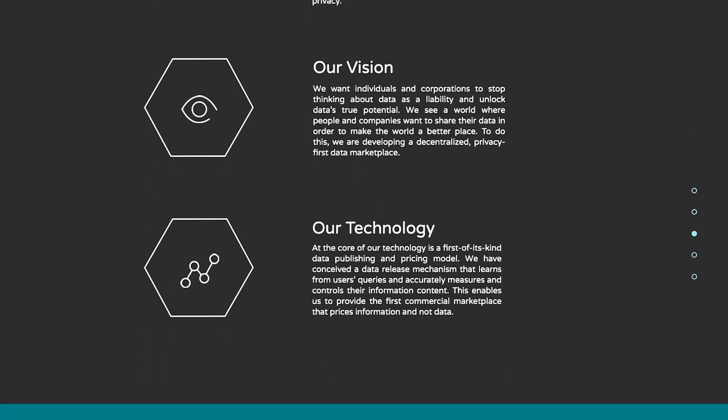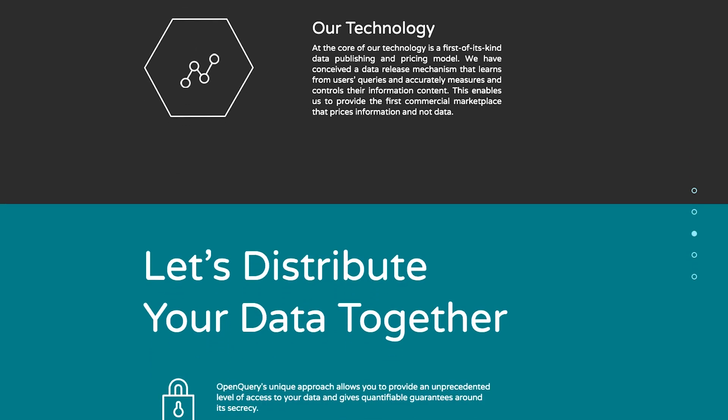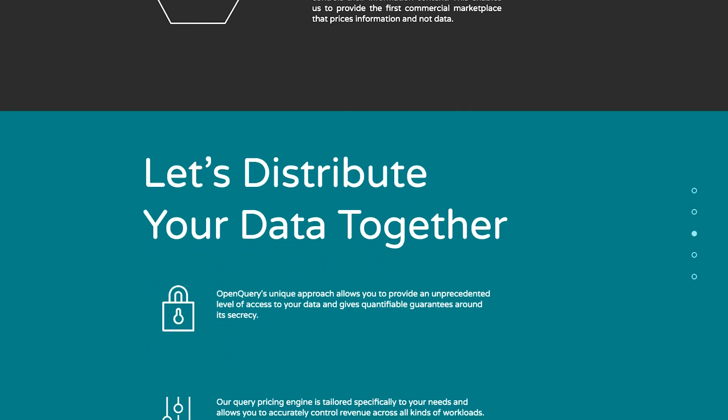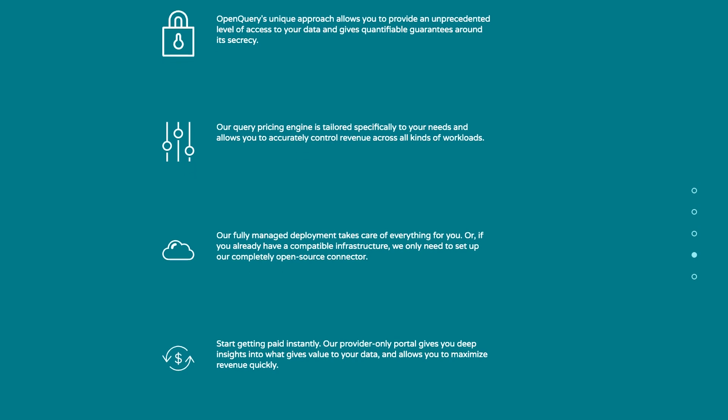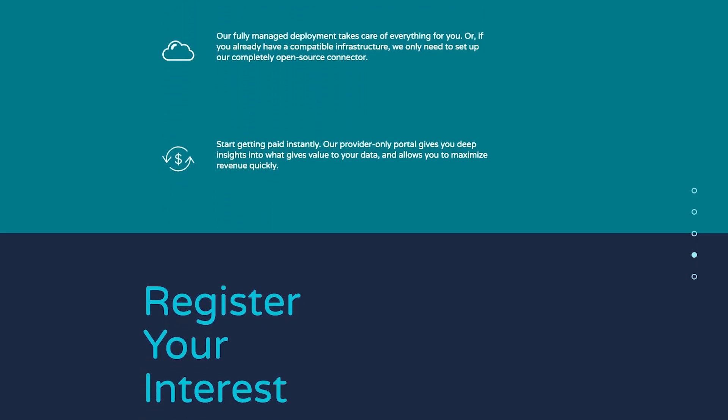The second problem is privacy and, more generally, conflicts of interest and sensitive information in that data. The third but also very important issue is the economic property of data. Data as an economic good is non-excludable — if you share it with someone, you can't really ensure that they will not disseminate it. What we are doing at Open Query is trying to solve these technical challenges by using technology that has been available for a while and building on top of it.